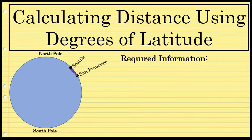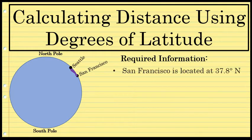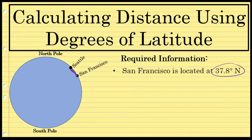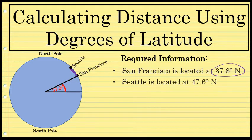There are a few pieces of information that I'll need before I can calculate this distance. First, the latitude of the two cities. The latitude of San Francisco is about 37.8 degrees north. What that means graphically is that from the center of the earth, the angle created between the equator and San Francisco is about 37.8 degrees.